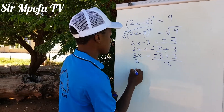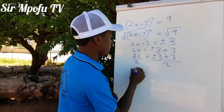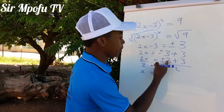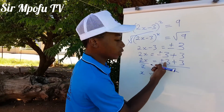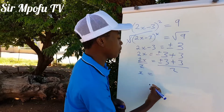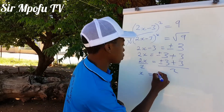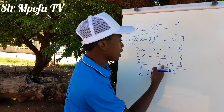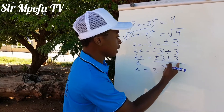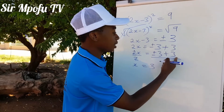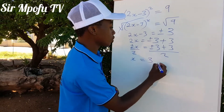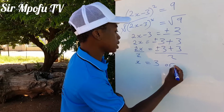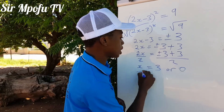So our final answer is going to be x equals... Starting with the positive one: 3 plus 3 is 6 divided by 2, that will be 3. Then if you say minus 3 plus 3, that will be 0 divided by 2, which is 0. So our answer is x equals 3 or x equals 0.